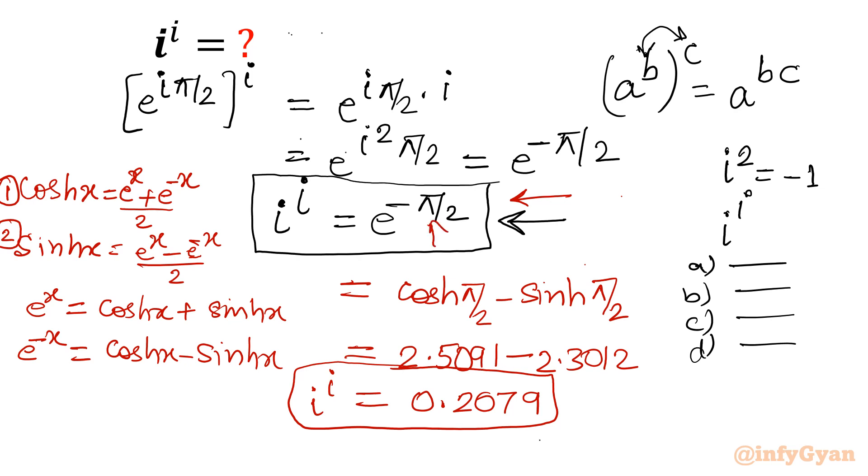So you can put, if you are using calculator, you can put here also. You will be getting 0.2079. So both ways you will be getting the same answer. You can cross examine. I hope you got the point.